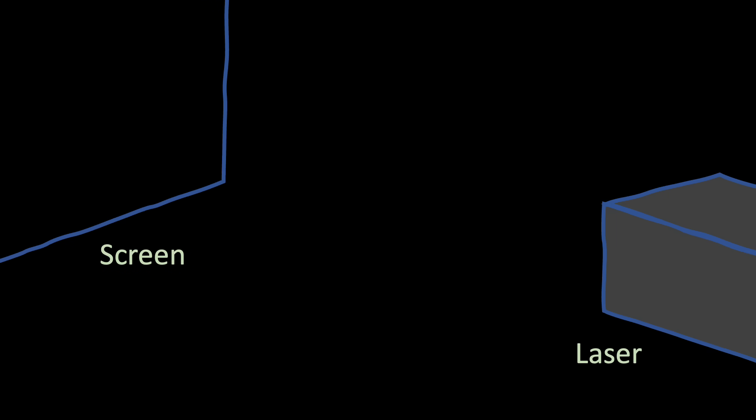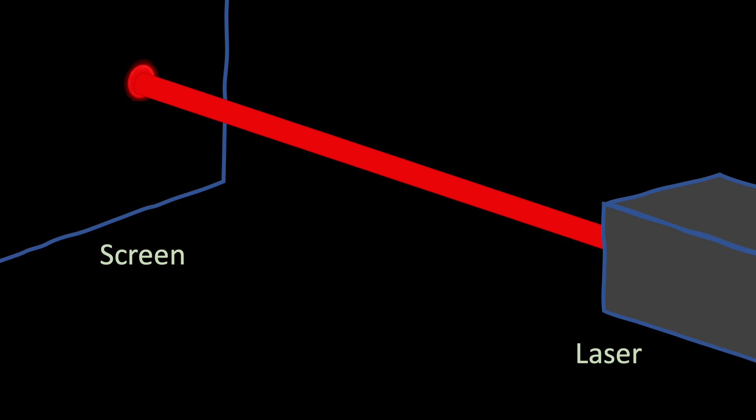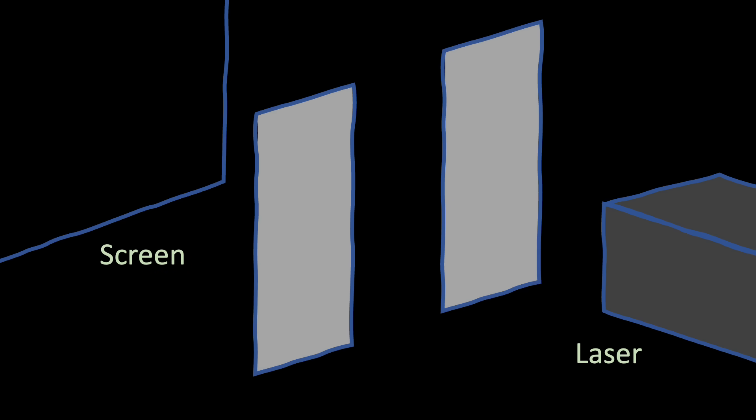To begin with, consider a laser beam. If you then fire the beam at a screen, you'll see a familiar circular patch of light. Next, consider introducing two barriers forming a gap, or a narrow slit. What happens if we pass the laser beam through this gap? You might think that as long as the gap is wide enough, the beam will just pass through unchanged.